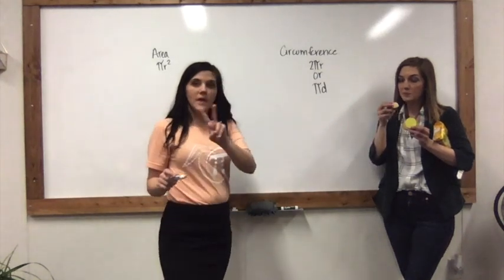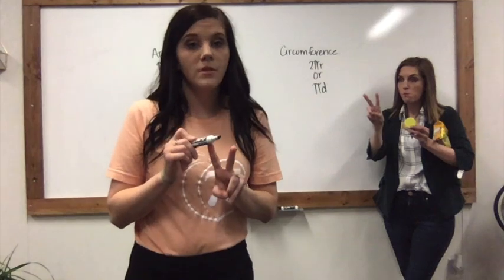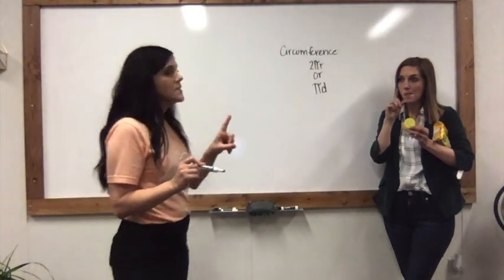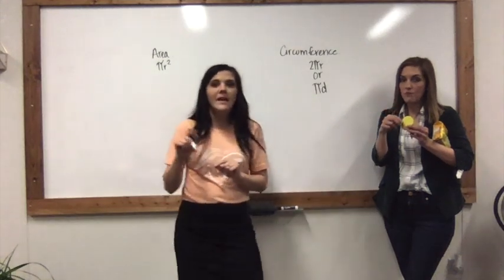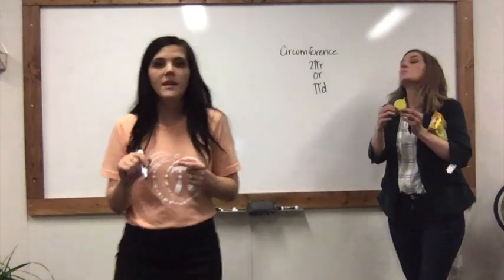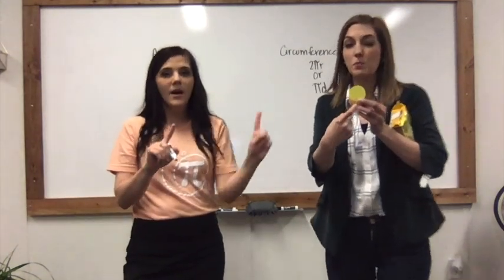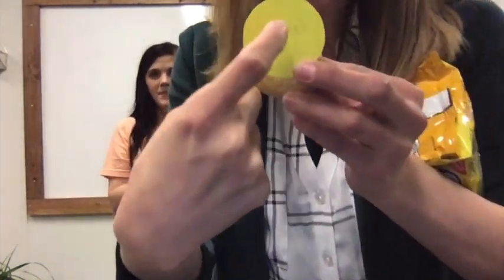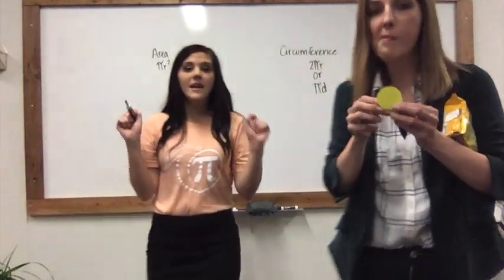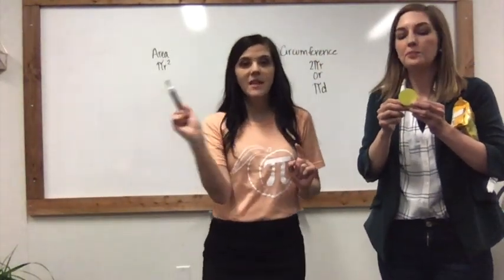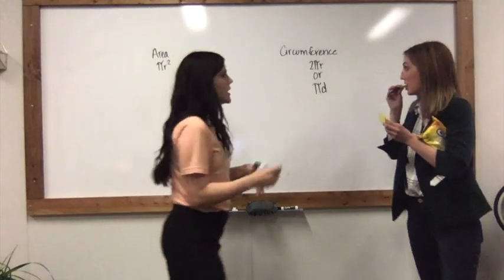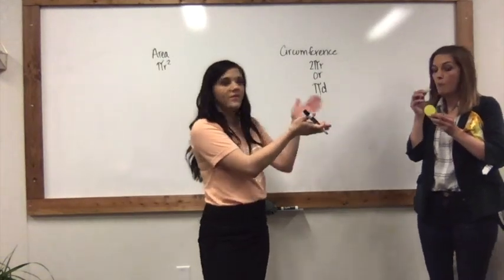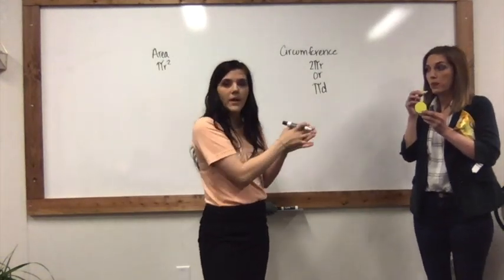There are two formulas we can use to calculate the circumference. The first one uses the radius. The radius — Ms. Claire is going to show you — is from the center point of the circle to the outside. The diameter is the entire length of the inside of the circle, from one side to the other side. So if we are using the radius, we're going to use the radius of this circle that I just showed you.